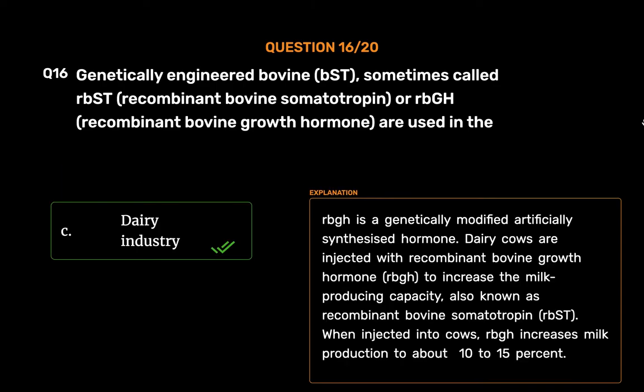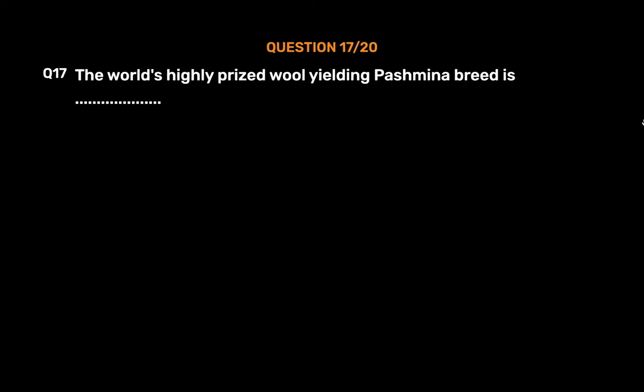rBGH is a genetically modified artificially synthesized hormone. Dairy cows are injected with recombinant bovine growth hormone (rBGH) to increase the milk producing capacity, also known as recombinant bovine somatotropin (rBST). When injected into cows, rBGH increases milk production by about 10–15%.